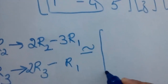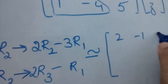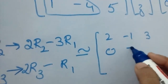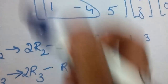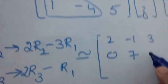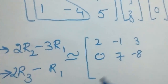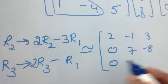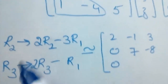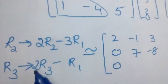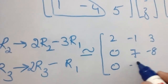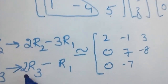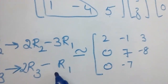Applying these operations, the first row remains [2, -1, 3]. For R2 using 2R2 minus 3R1: the second element gives 4 minus 3 equals 7. For R3 using 2R3 minus R1: the elements compute to give [0, -8, -7] approximately, with the third element being 10 minus 3 equals 7.